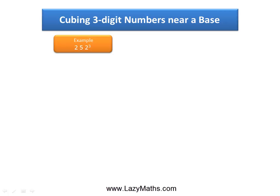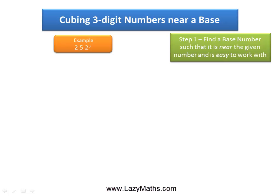Here's an example of cubing a three-digit number near a base: 252 cubed. The first step is to find a base number. A base number is a number which is close to 252 in this case, and it's also easy to work with. In this case, we can have the base number as 250.